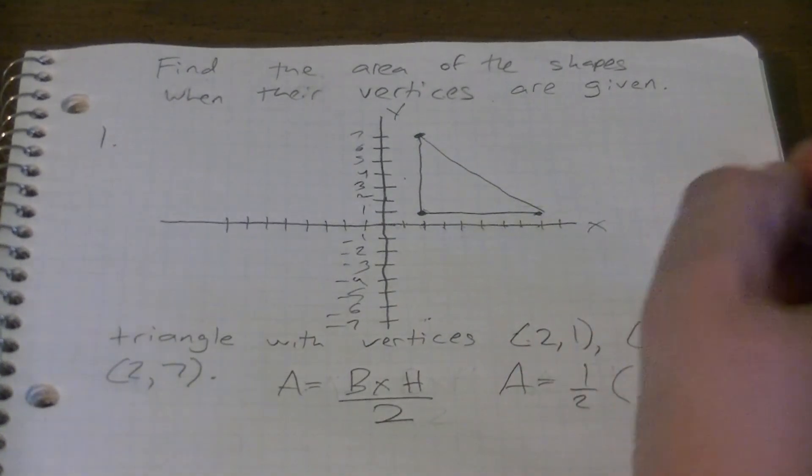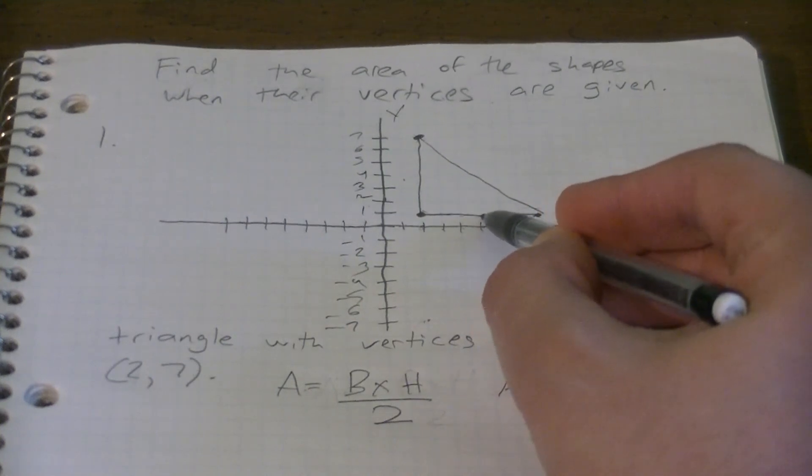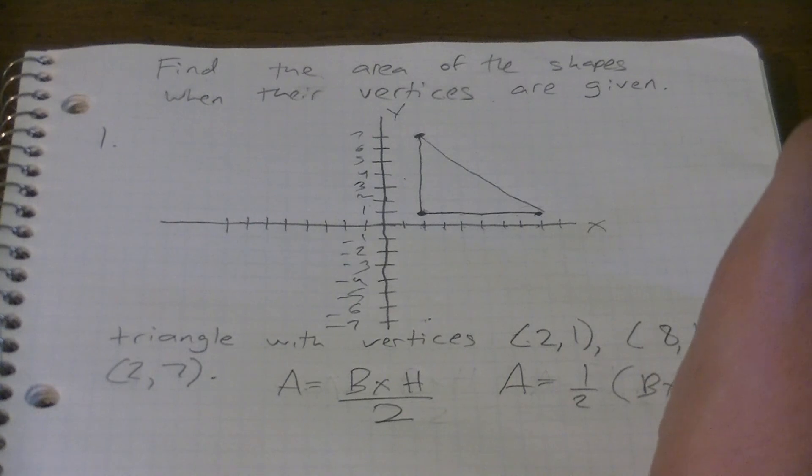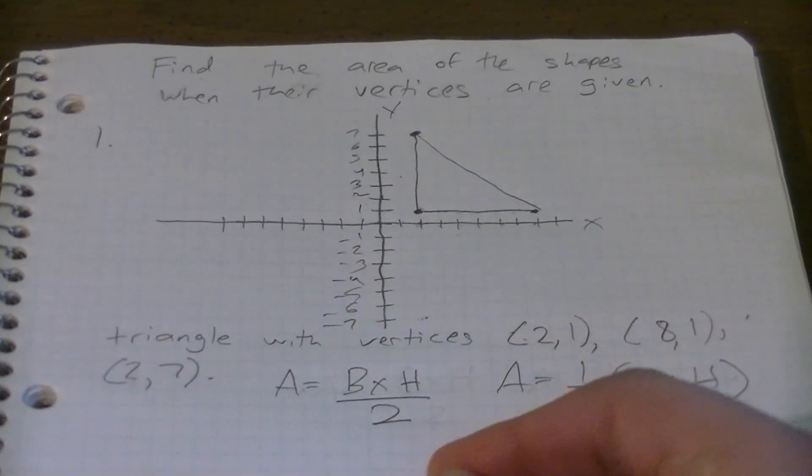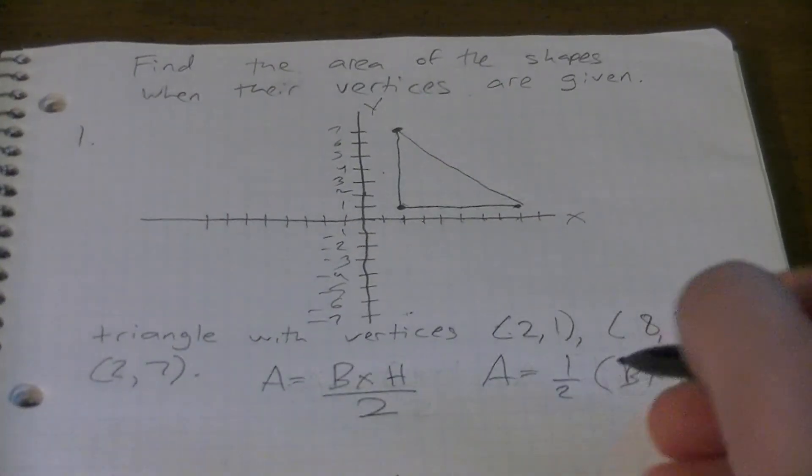This is our base. How do we know how big our base is? Well, we can count - we can start from here: one, two, three, four, five, six. Or we can just do eight minus two equals six. So our base is six.